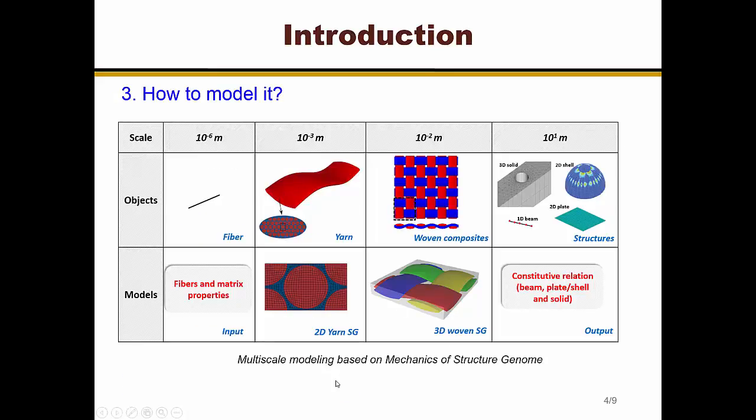So how to model it? Here, let me introduce multi-scale modeling based on mechanics of structural genome. First, at the lowest level, we usually have the properties of fibers and matrix. And from fibers and the matrix, we can construct the yarn model to get the yarn properties. Once we have the yarn properties, we can go to the next level, which we think the materials is made up by the yarn and matrix. And then we get the woven composite properties. And in a general sense, this is the constitutive information.